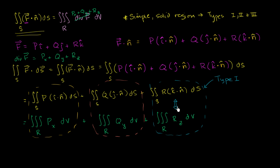That's essentially going to be it, because you can use the exact same argument and the fact that it is a type 2 region to prove this, and the exact same argument and the fact that it is a type 3 region to prove that.